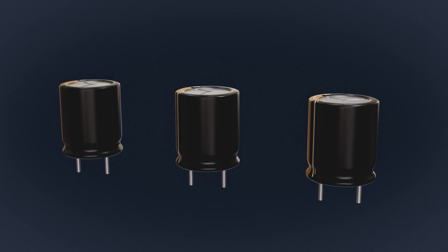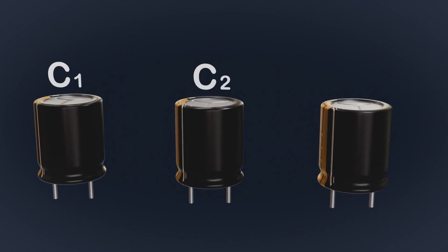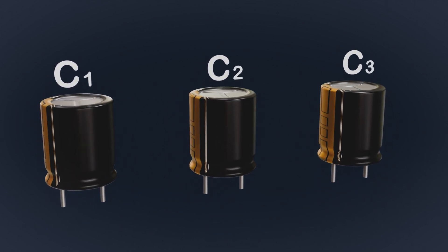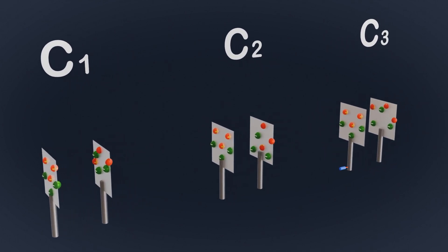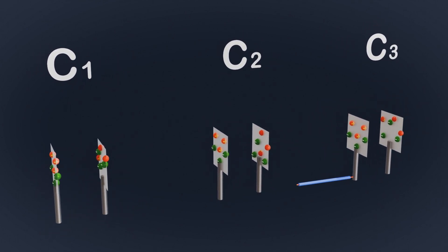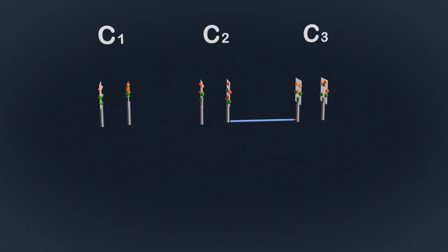Imagine we have three capacitors, C1, C2, and C3, connected in series. But what does a series combination mean? It simply means that the capacitors are connected one after another in a single path, just like a chain.